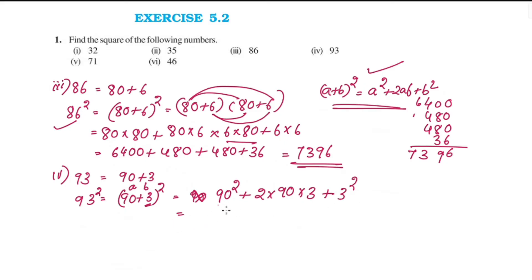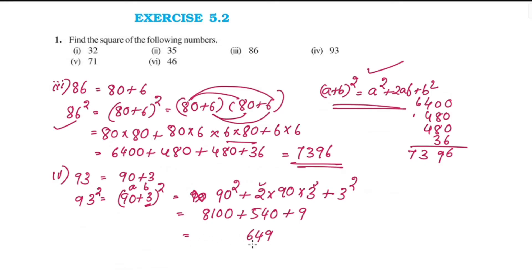90 squared is 90 × 90 = 8100. Then 2ab is 2 × 90 × 3 = 540. Plus b squared is 3² = 9. So 8100 plus 540 plus 9 equals 8649. Therefore 93 squared is 8649.